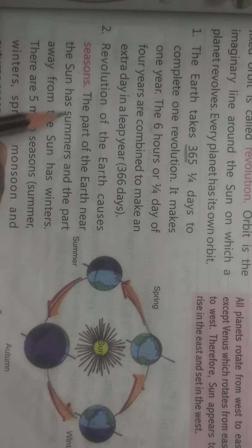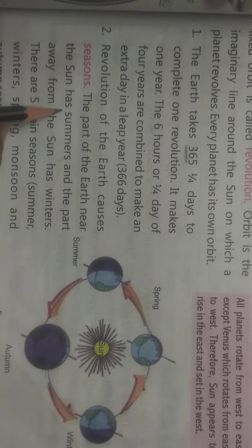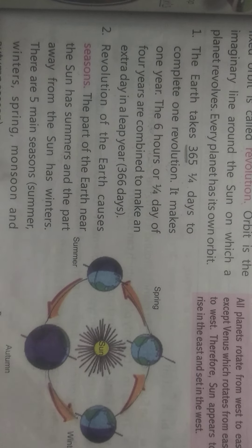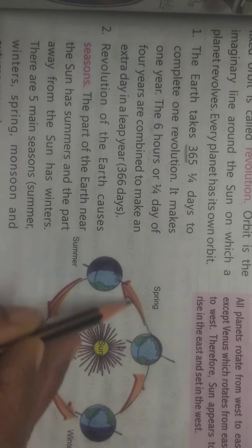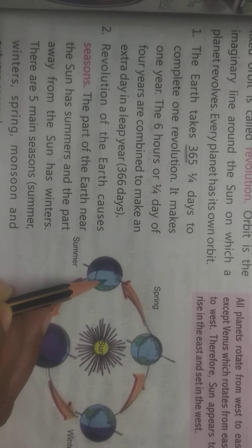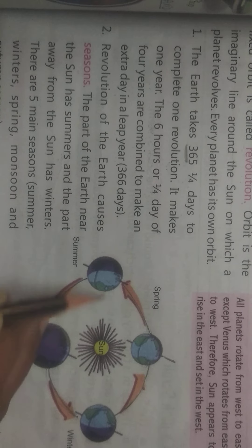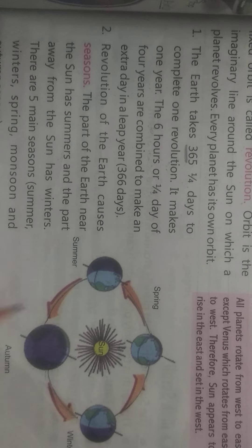How do seasons occur? The part of the earth near the sun has summers, and the part away from the sun has winters. Earth ka jo part sun ke paas mein hai, us par summer season hota hai. Aur jo path sun se door mein rehti hai, us path ke upar winter season hota hai. Iss tarah seasons form hote hain.